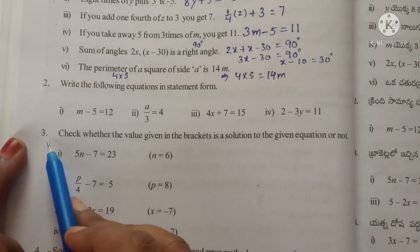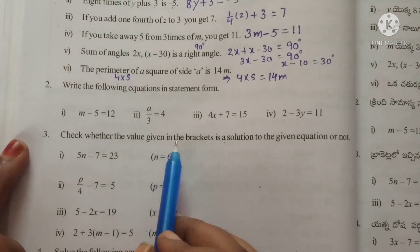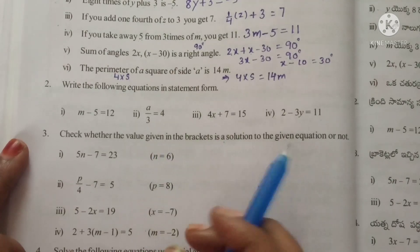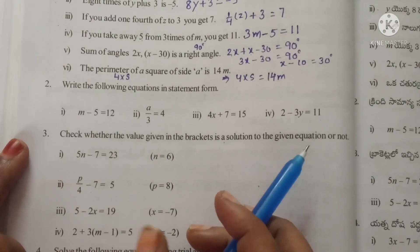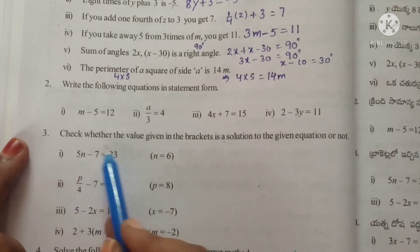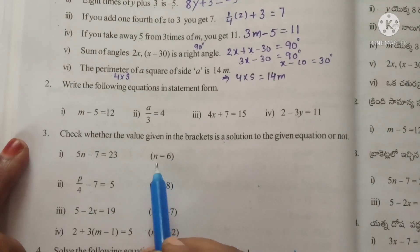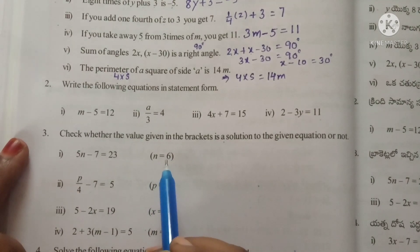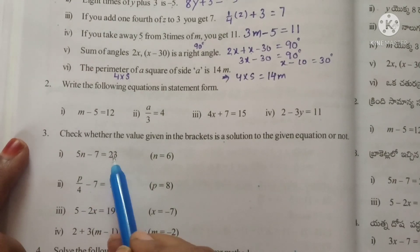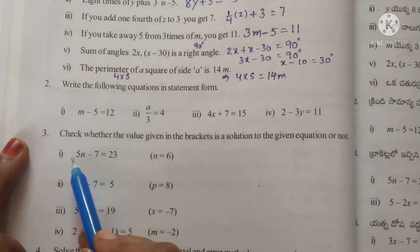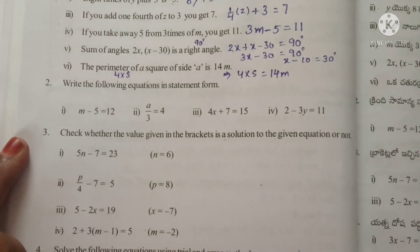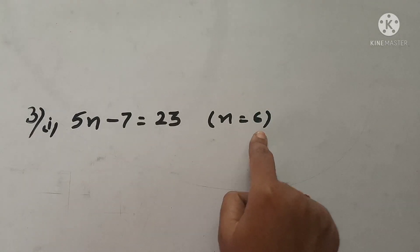Look at the third question: check whether the value given in the brackets is a solution to the given equation or not. The solution of the equation is the root of the equation. Here an equation is given and in the bracket there is a value. We substitute that value into the equation and check if it satisfies. Let's see the first one: n value is given as 6.